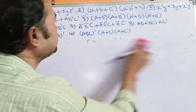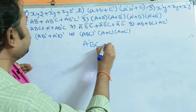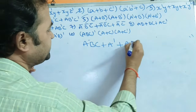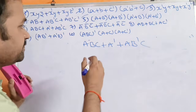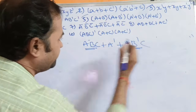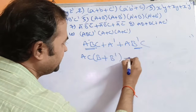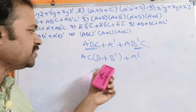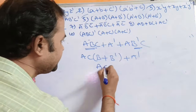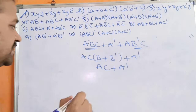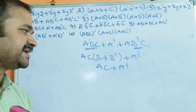Now let us solve the sixth problem: abc + a' + ab'c. Observing the first and third terms, ac is common. The remaining variables are b and b', so ac(b + b') = ac·1 = ac. So ac + a'. The simplified expression for the sixth problem is ac + a'.